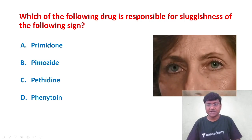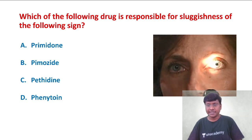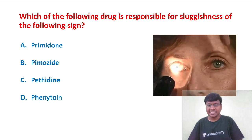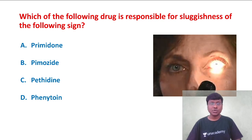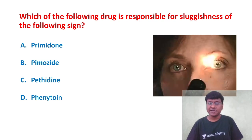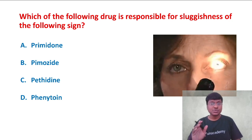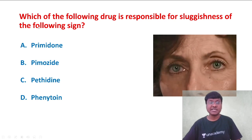You can observe what the patient is being subjected to. A torchlight is shown into the eyes and you can observe the pupillary size and the changes that can be observed. So first of all, what is this particular sign? It is a direct light reflex. Which of the following drugs is responsible for sluggishness of this particular direct light reflex?